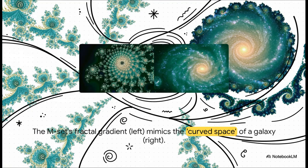The paper also suggests a different way to think about gravity. Instead of the curvature of space that Einstein described, what if it's actually a kind of fractal gradient? I know, it's a huge leap. But when you zoom in to the M-set, these gradients produce patterns that look remarkably similar to the grand spiral arms of galaxies.